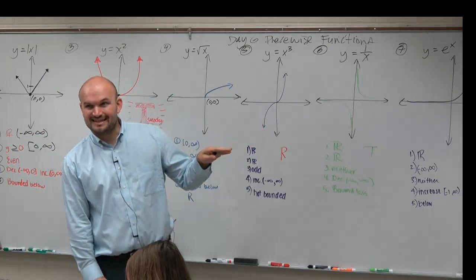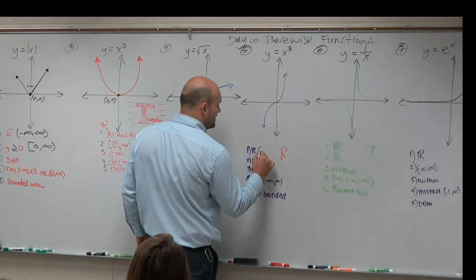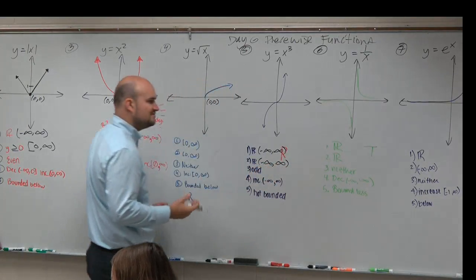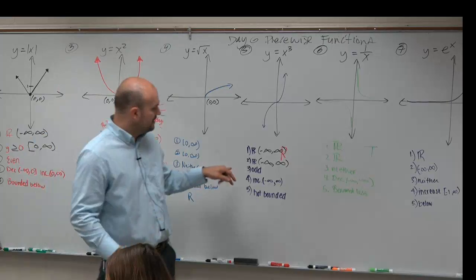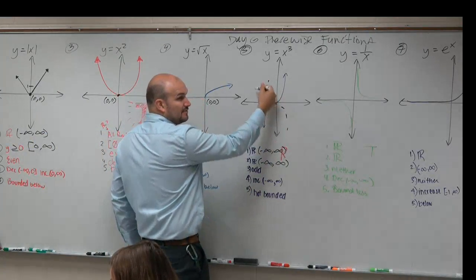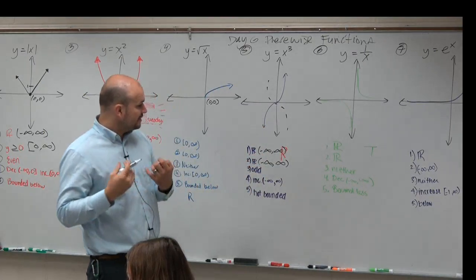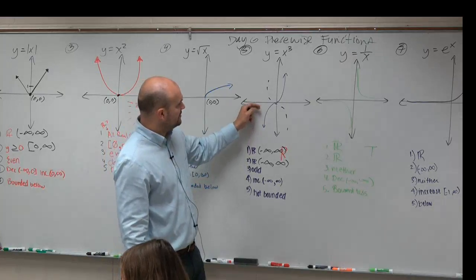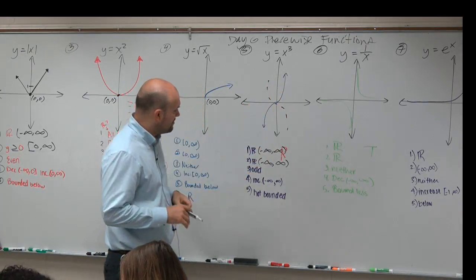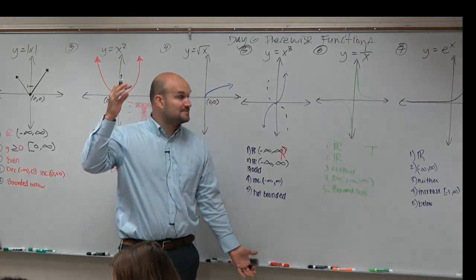The cubic function, also known as the S-curve — it's kind of like a nice little S. The domain is from negative infinity to infinity. The range is negative infinity to infinity — all real numbers. It is odd: if you reflect about the x-axis and then about the y-axis, you get the exact same graph. It is increasing across the whole domain, even though it kind of looks like it gets constant for a split-second, but it's still increasing. And it is not bounded at all — there's no absolute min and no absolute max.